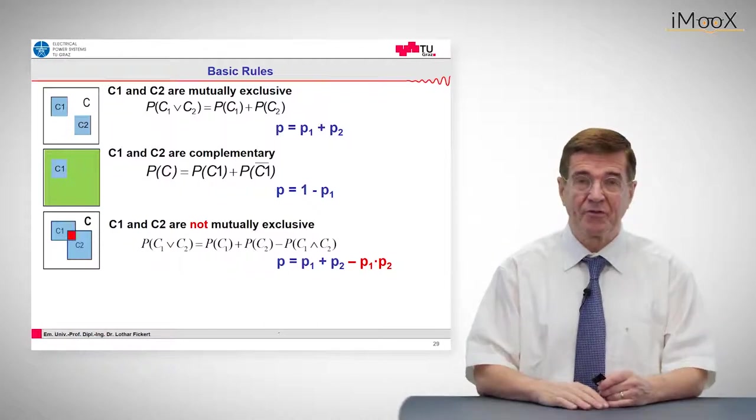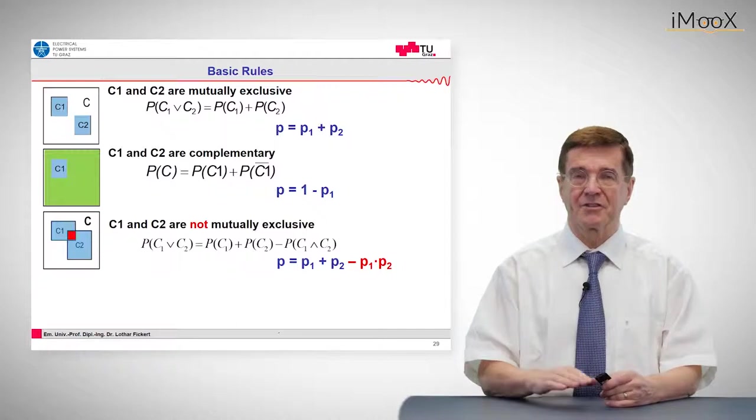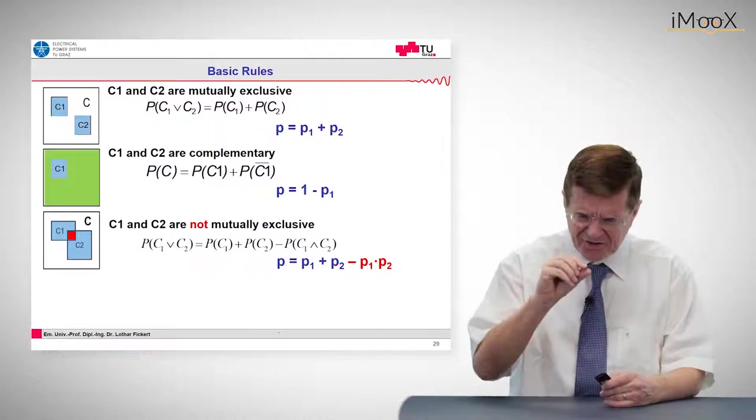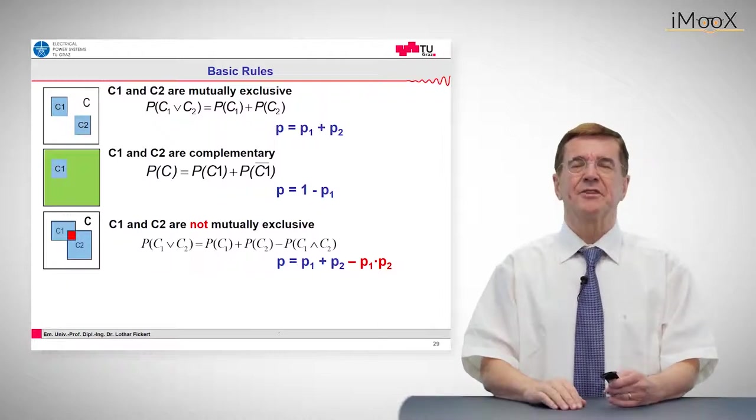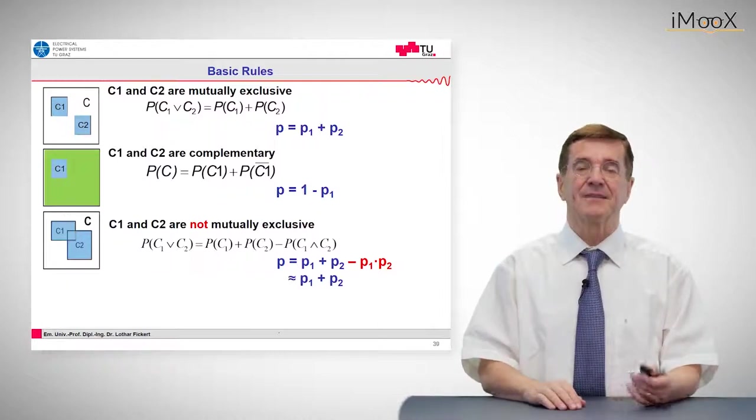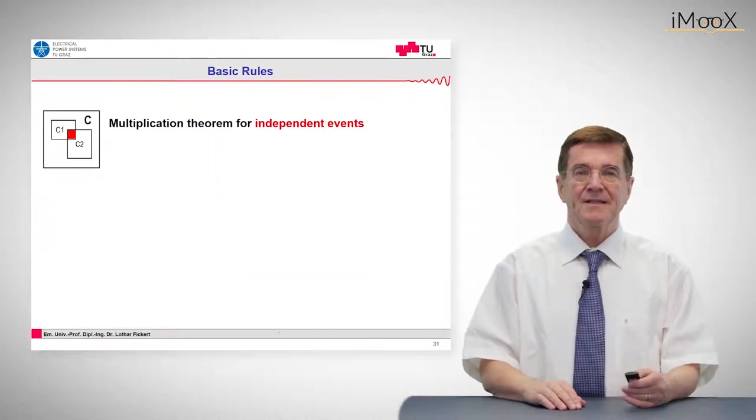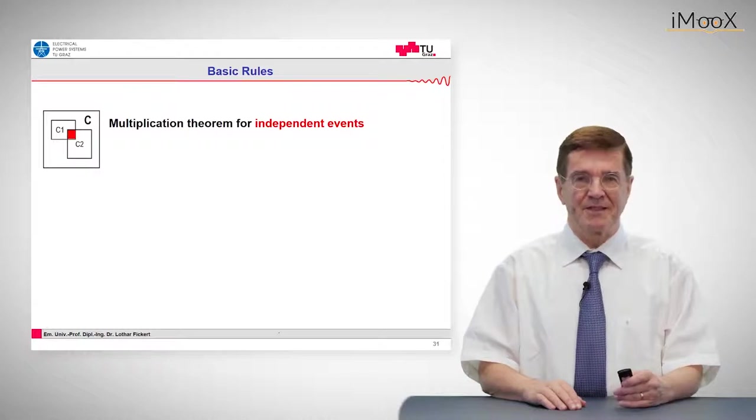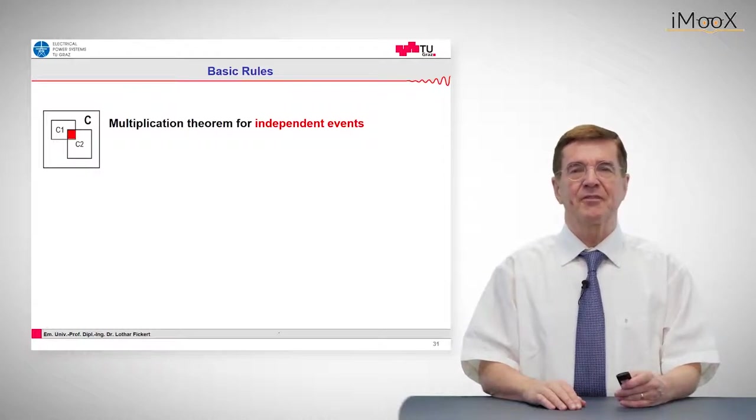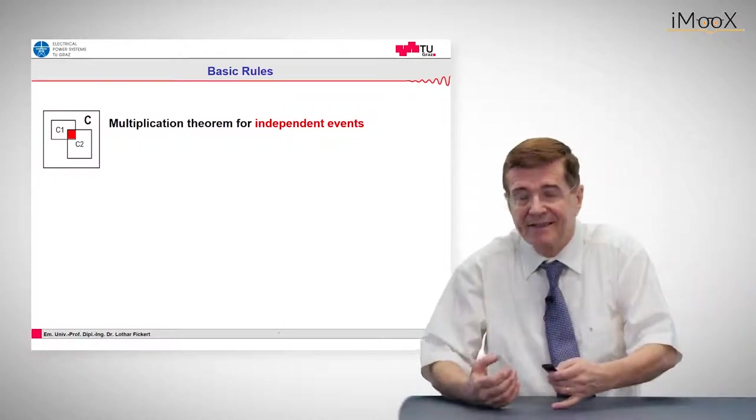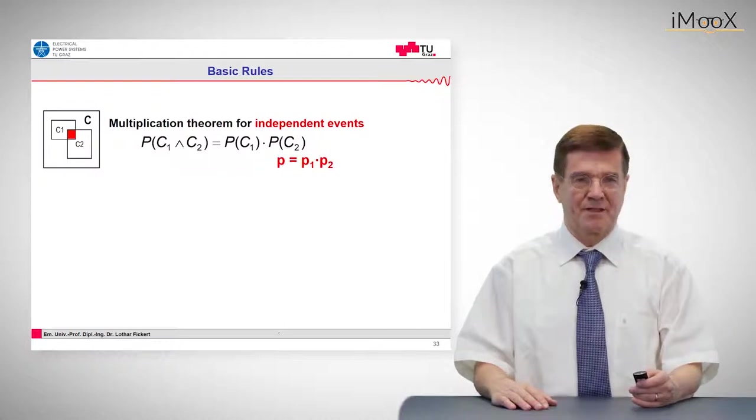But as I mentioned before, probabilities in electrical protection are very low. So the square of these probabilities is such a small unit that you can neglect it and you come out with just the plain sum. The last basic rule for probabilities is the multiplication theorem for independent events. If we have independent events, the probability is given by the product.